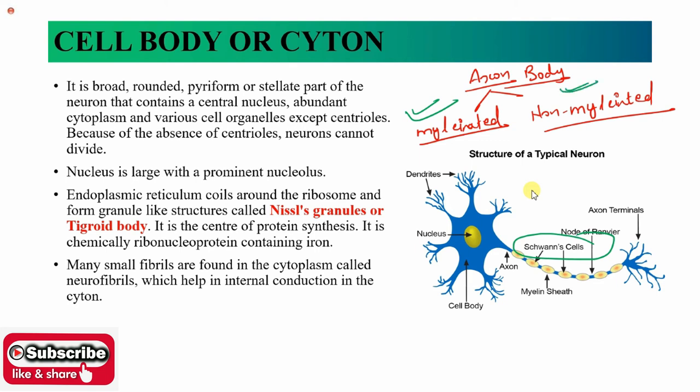Axons on which myelin is present will be myelinated, and axons on which myelin is absent will be non-myelinated. But you have to be clear that Schwann cells are present in both types — whether myelinated or non-myelinated. The difference is that in myelinated axons the myelin sheath covering is present, but in non-myelinated ones, the Schwann cells do not synthesize myelin.